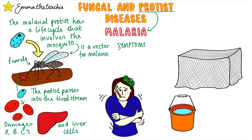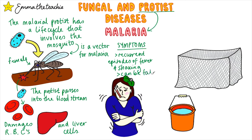Once in the bloodstream, the protist circulates around the body and damages both the blood cells and the liver cells. The symptoms of malaria are recurring episodes of fever and shaking. It can be fatal if it isn't treated promptly. In many countries where malaria is prevalent, like sub-Saharan Africa, medicine isn't easily accessible or is very expensive, so unfortunately many people die from this disease.